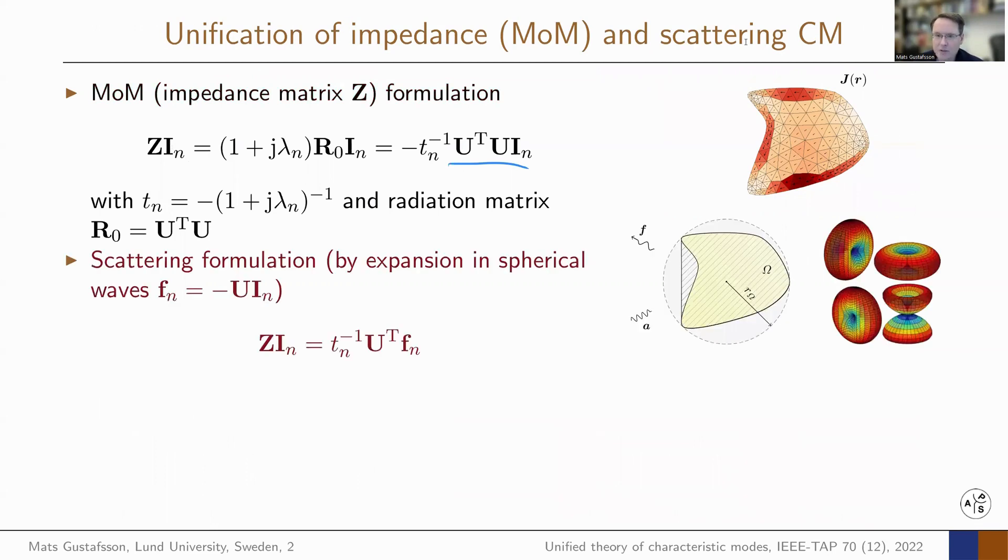In the scattering formulation, we let the U here denote the expansion of spherical waves. We have some structure with some current and it radiates some field F. That is determined by this matrix U. If I take the characteristic mode formulation, I then get this.